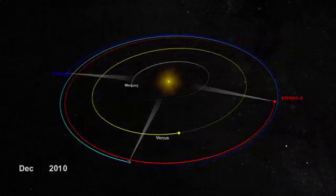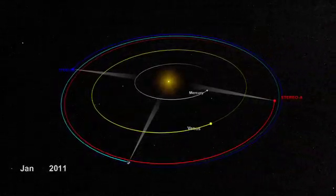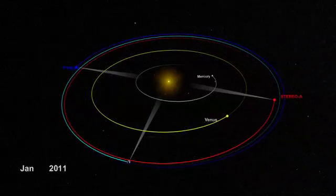Now STEREO A and B are almost exactly opposite each other, and for the first time in human history, we have a view of the entire Sun.